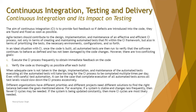Different organizations have different priorities and different projects need different solutions to find the right balance between these goals. For example, if a system is stable and changes less frequently, fewer CI cycles are needed. If the system is being updated constantly, more CI cycles are most likely required. These are the problems — so what are the solutions?